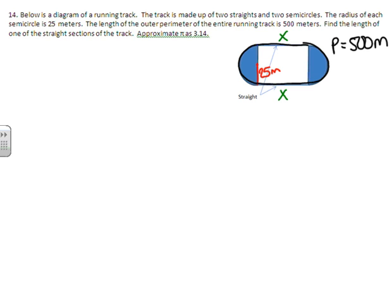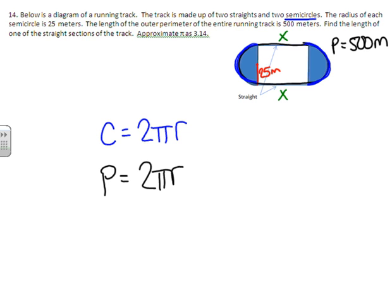So the whole perimeter is 500 meters. Let's look at the pieces that make up that perimeter. First we have these two circular pieces. And when we put the two half circles together or the two semicircles together, we get one full circle. So circumference of the blue part is 2 times pi times radius.